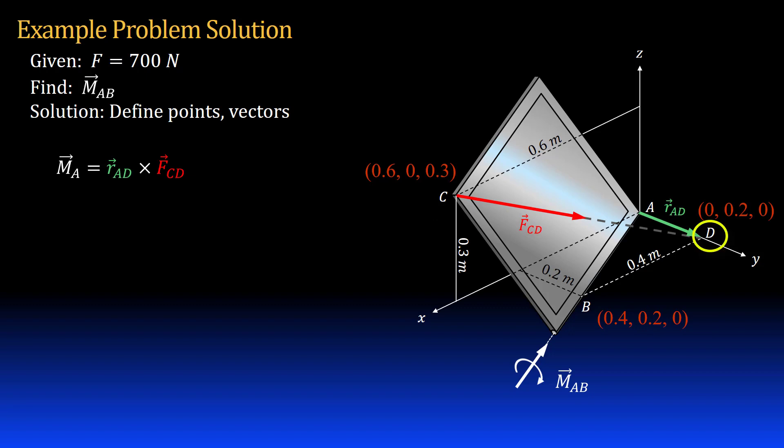Point D is at 0 x, 0.2 m y and 0 z. I can write my position vector r_AD as the coordinates of point D minus the coordinates of point A which is the origin. I am left with 0.2 meters in the Y or j direction.